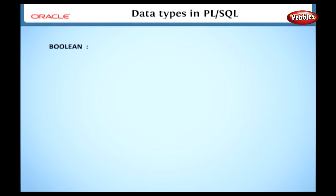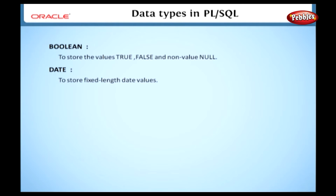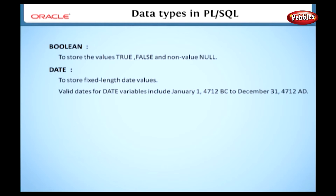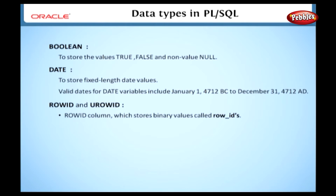Boolean. This data type is used to store the values true and false and the non-value null. This data type doesn't take any parameters. Date. This data type is used to store fixed length date values. The date data type takes no parameters. Valid dates for date variables run from January 1, 4712 BC to December 31, 4712 AD.